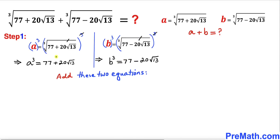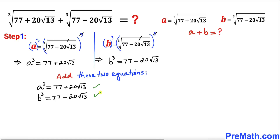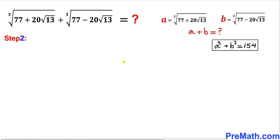Now let's go ahead and add these two equations. Here I have copied down these two equations. Adding them gives us a cubed plus b cubed equals 77 plus 77, since the positive and negative square root terms cancel. That gives us 154. And here's our next step.